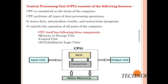The second basic component is the Central Processing Unit. The CPU is also known as the brain of the computer and it performs all types of data processing operations. Whenever we enter data from input devices, that data is processed through the CPU. It also stores data, intermediate results, and instructions.